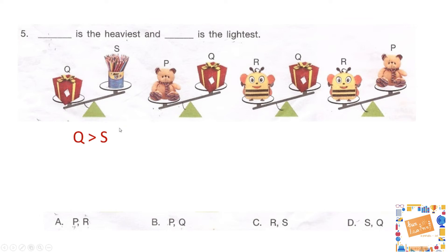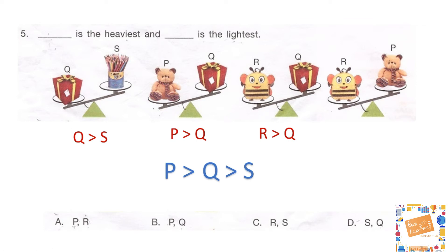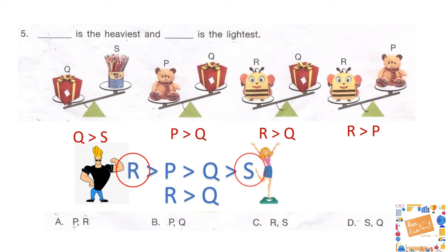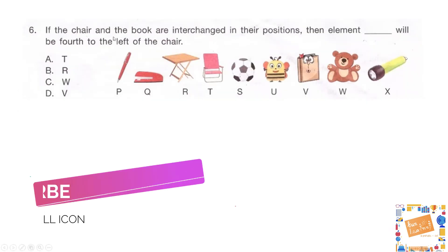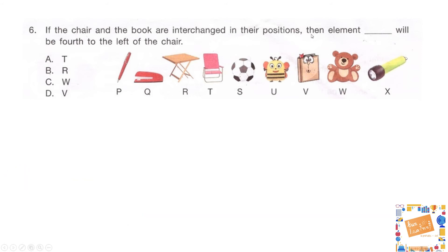The first figure shows Q is heavier than S because the pan for Q is lower in the balance beam. The next figure shows P is heavier than Q, so P is heavier than Q and Q is heavier than S. The third figure shows R is heavier than Q. Since we don't yet know if P or R is heaviest, the last figure tells us R is heavier than P. Therefore R is the heaviest and S is the lightest — the correct answer is option C.